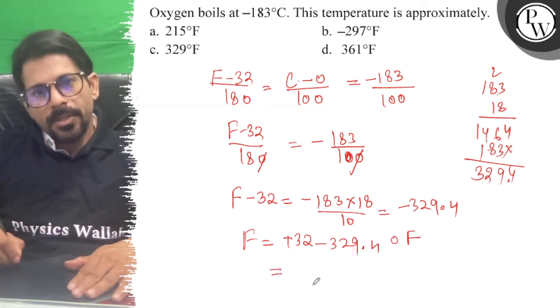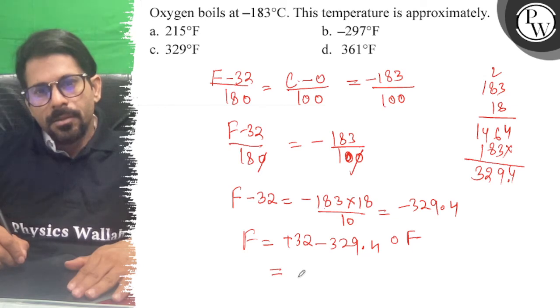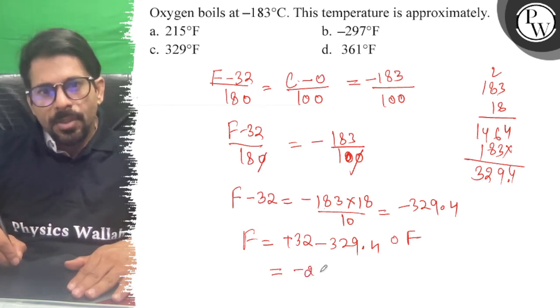So if we solve this, how much do we get? 32 minus 329.4 equals minus 297 degrees Fahrenheit.